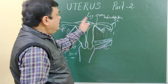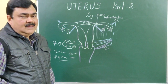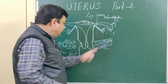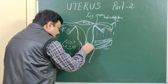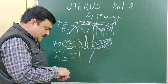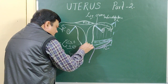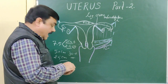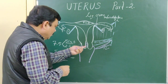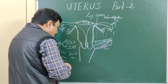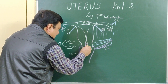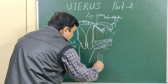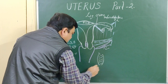Now, uterus part two. In this part we will discuss about the content of the broad ligament and the cervical canal. The mucosa of the cervical canal has an appearance like a tree, that's why it is known as arbor vitae uterine — this tree-like appearance is known as arbor vitae uterine.